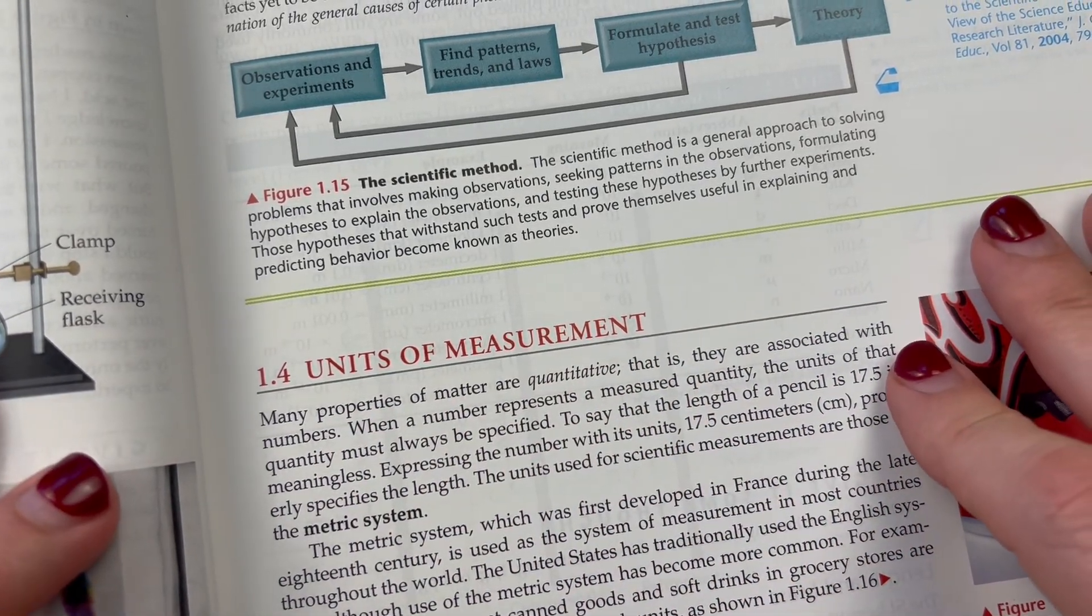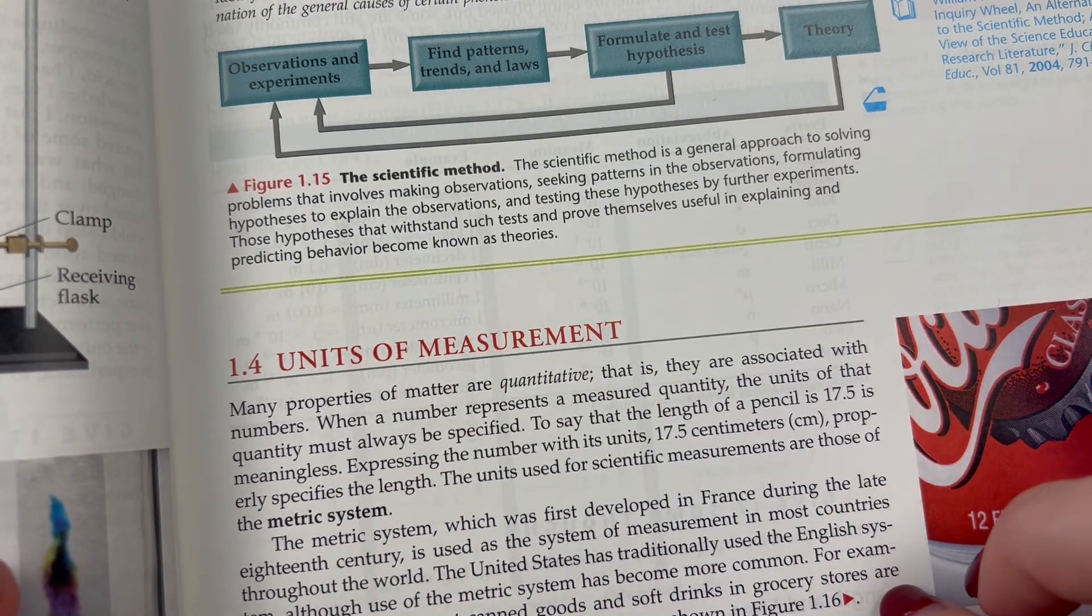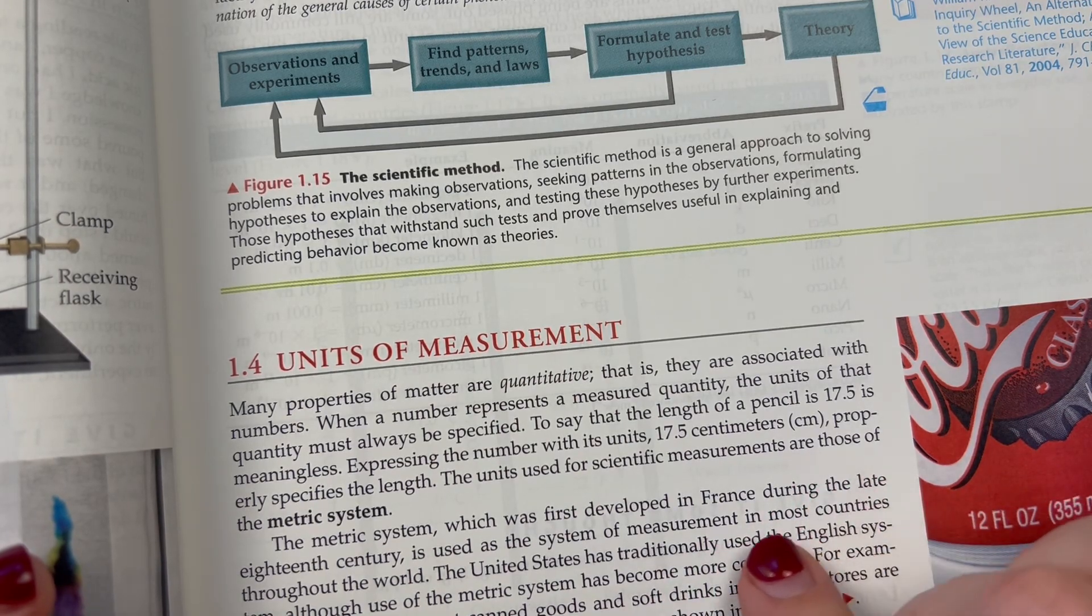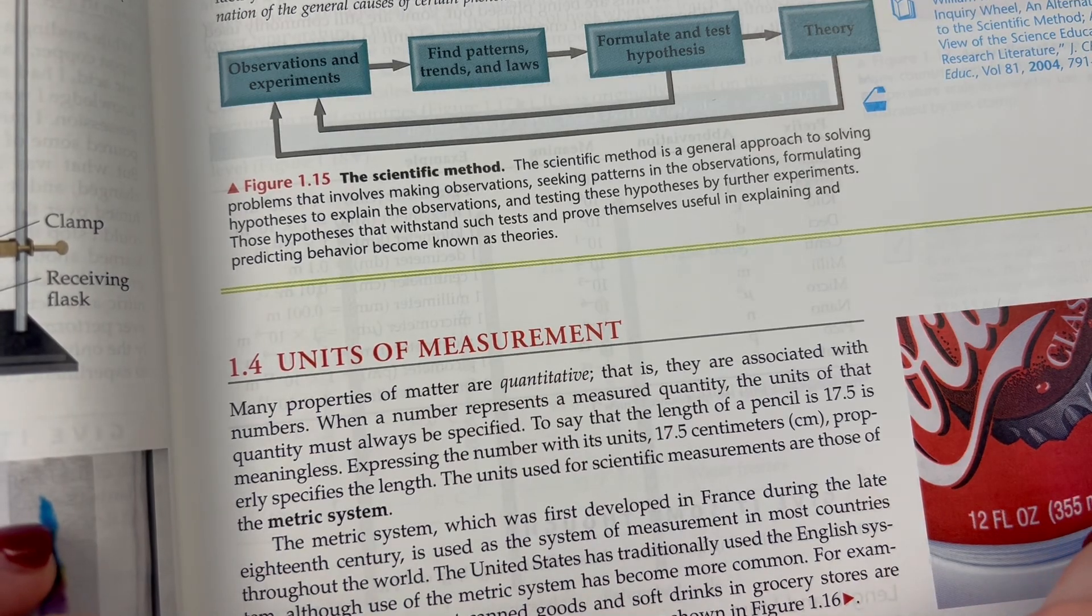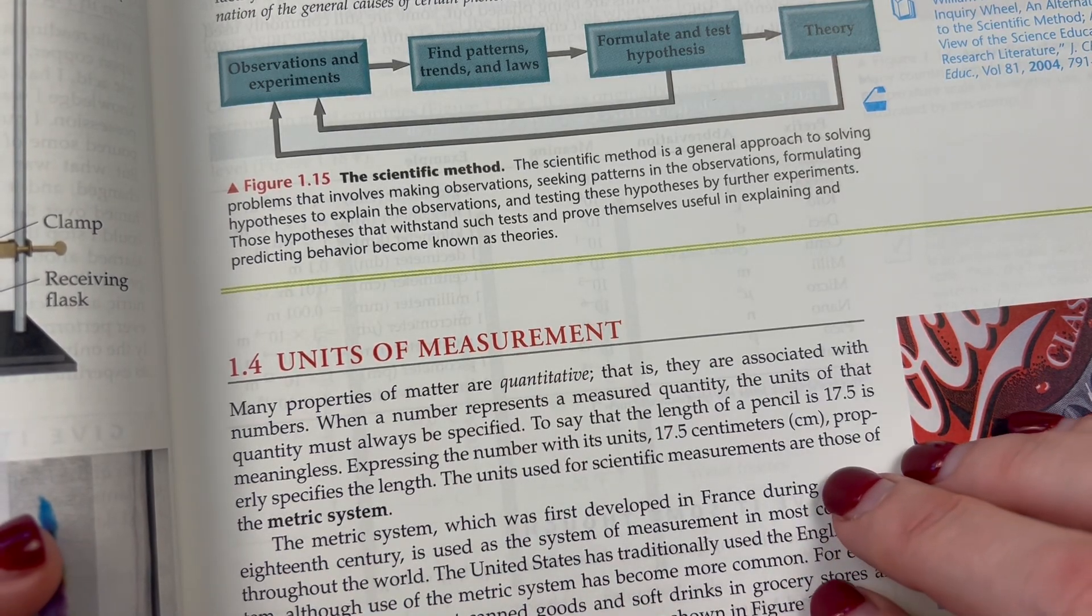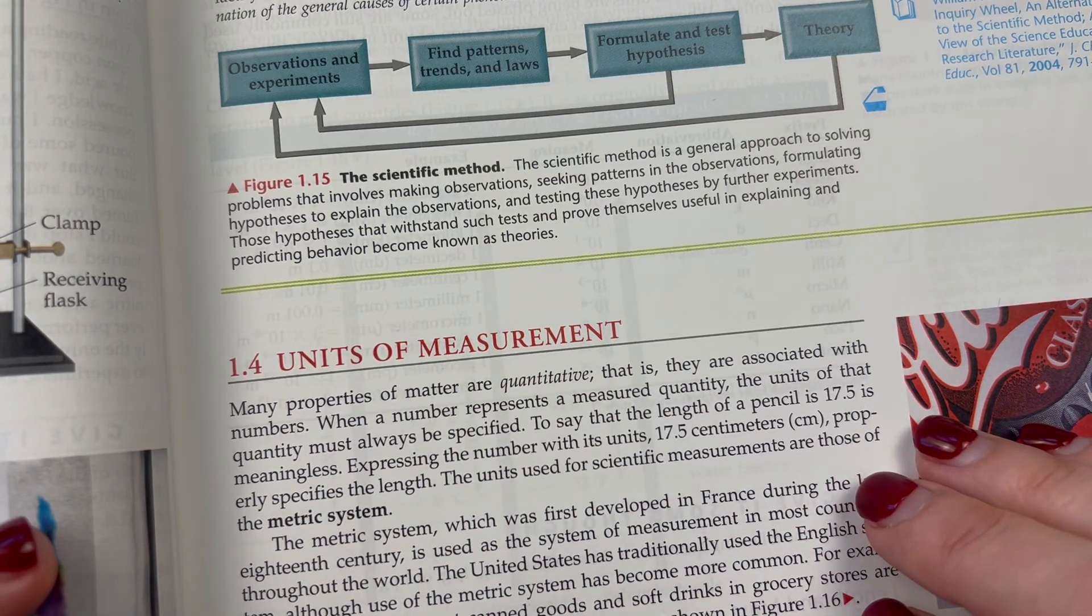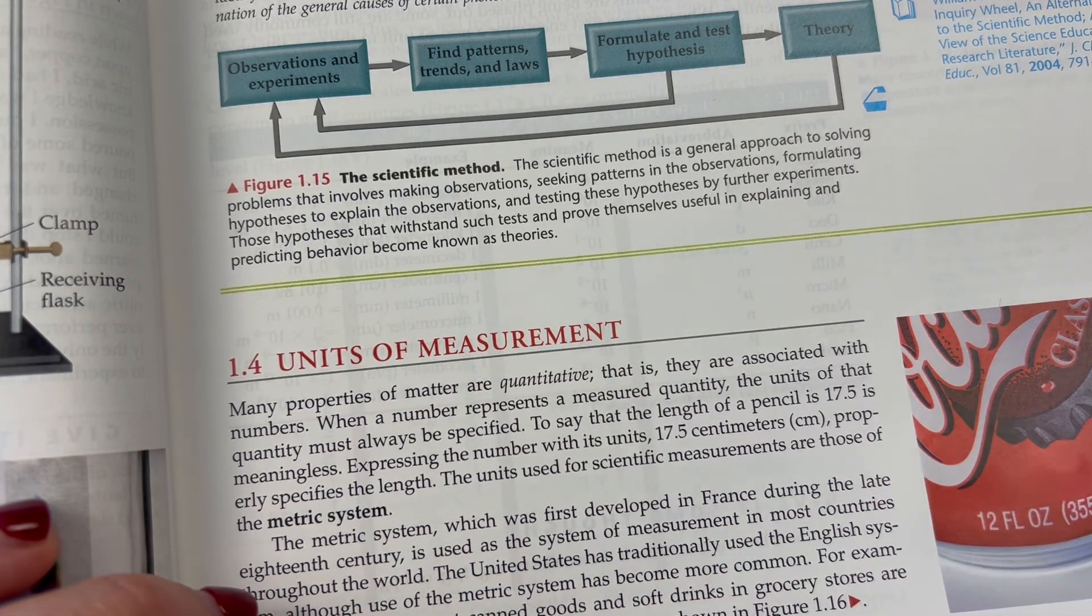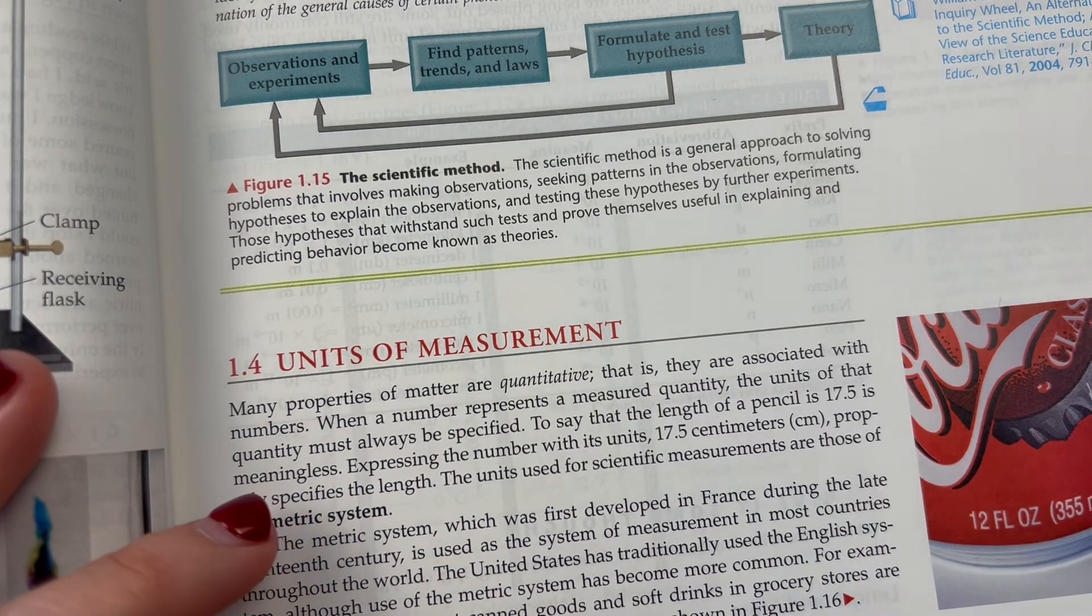And in chemistry, as we do with many sciences, we use the metric system exclusively. Which, for those of us in the United States is a little different than what we're used to. But for the rest of the world, it probably feels very normal, which is great. I do wish the United States would switch over.